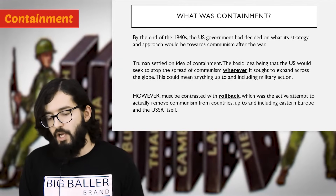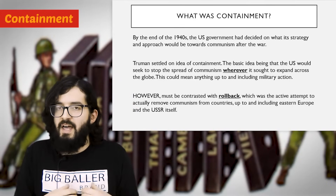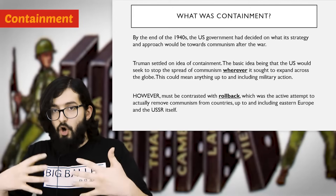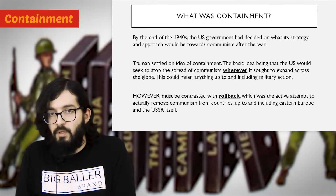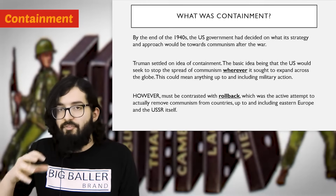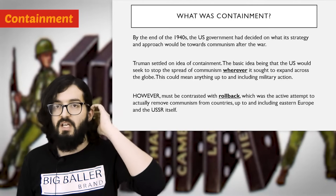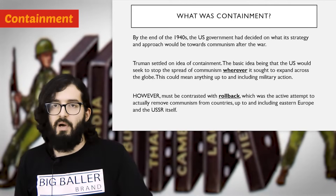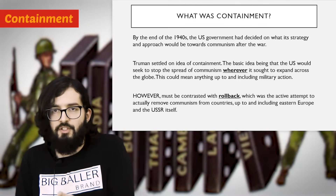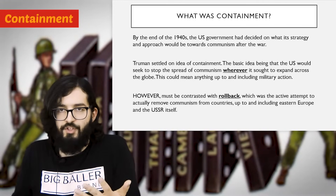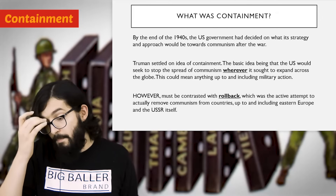It's important to understand that containment is different to rollback. Rollback is the idea of removing communist governments where they've already come into power. Containment is simply stopping communism from spreading into further countries or protecting countries on the verge of going communist. Eastern Europe, for example, is considered a lost cause because it's already under Soviet control. There are examples of the US attempting rollback, as we'll see in this topic, but generally this topic is focused on containment only.